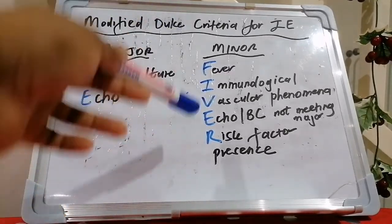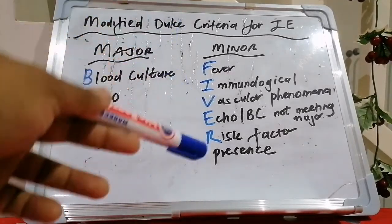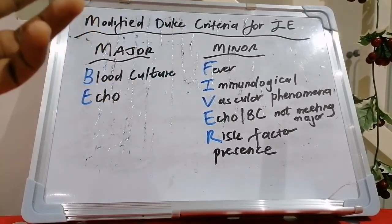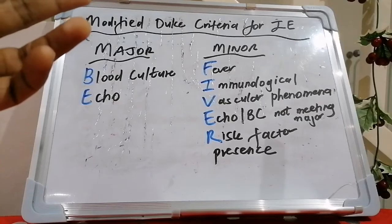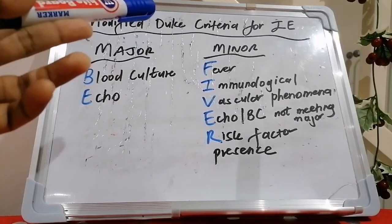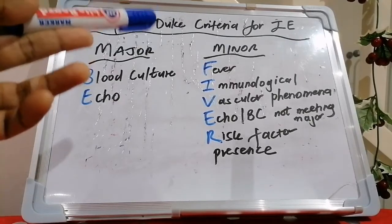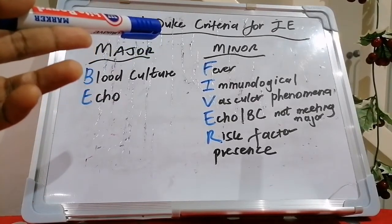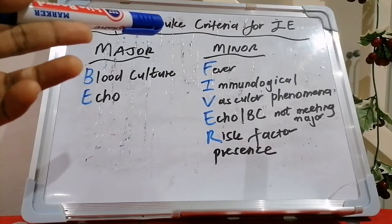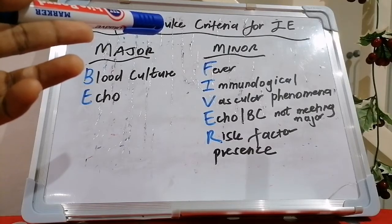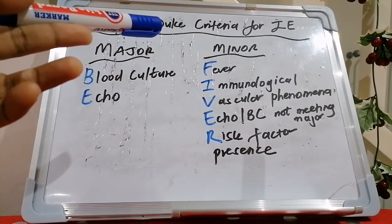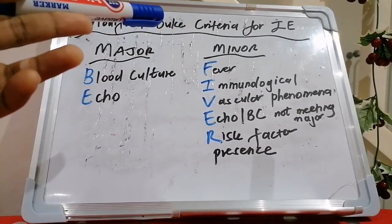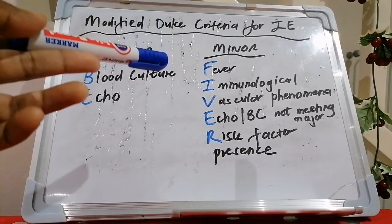For the minor criteria, the mnemonic is FIVER — F-I-V-E-R. F refers to fever, defined as a temperature above 38 degrees Celsius. I is immunological phenomena, including Roth spots, Osler's nodes, glomerulonephritis, and positive rheumatoid factor.